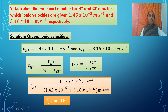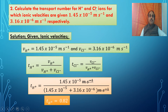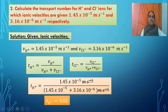Problem 2: calculate the transport number for H⁺ and Cl⁻ ions for which ionic velocities are given as 1.45 × 10⁻⁵ meter per second and 3.16 × 10⁻⁶ meter per second. Transport number is the fraction of the total current carried by the cation or anion, which also corresponds to the fraction of the velocities carried by each ion.